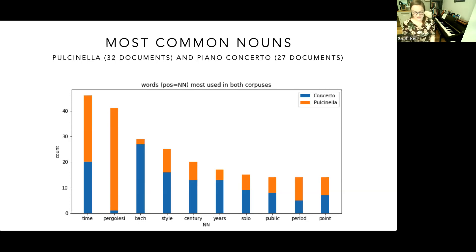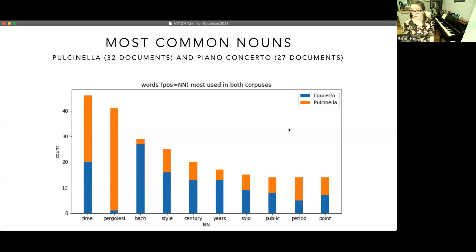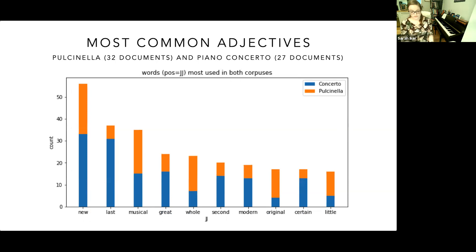Here is a graph comparing the top words used in the Pulcinella and the piano concerto corpora, separated by parts of speech. These graphs do have some of the same issues as word clouds in that they don't give us context about text, but they do make it a lot easier to see trends. Our nouns graphic highlights some important features — one acts as a control for us: Pergolesi is more often associated with Pulcinella, while Bach is most often associated with the piano concerto, which is what we expect to see.